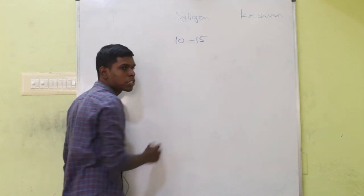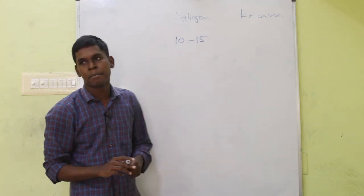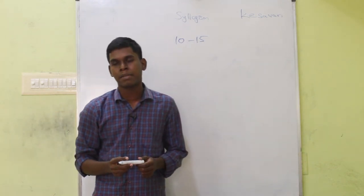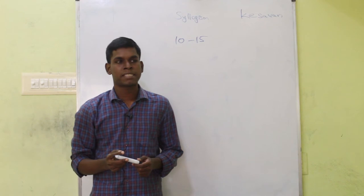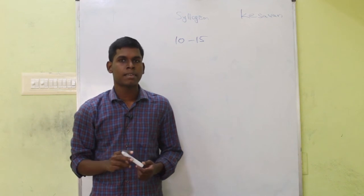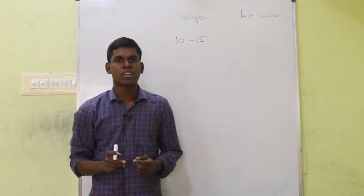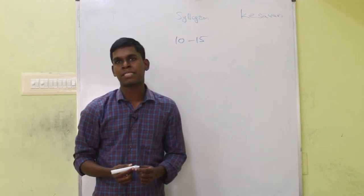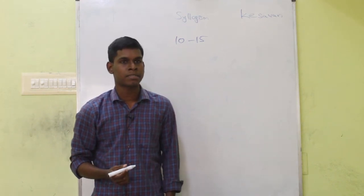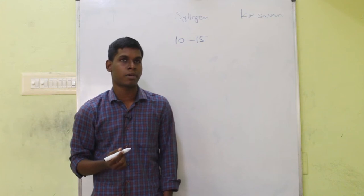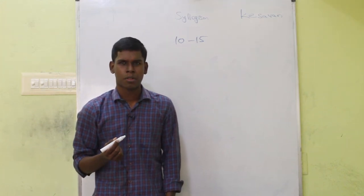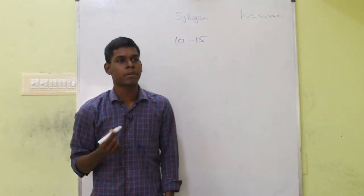When you solve syllogism, there is a good method. One is based on Venn diagram, the second one is based on formula method, and the third one is to connect logically — which I don't recommend because it's for people who are extremely good at it.